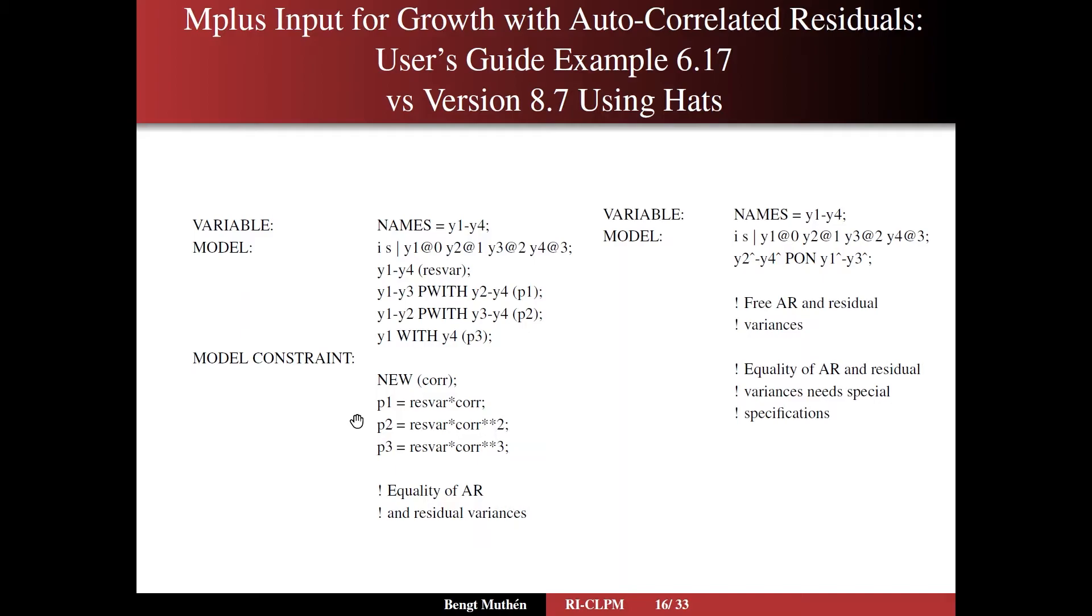And then you have to add a model constraint. This is again in old Mplus, so to speak, where you introduce the three parameters here as functions of only two parameters, residual variance, which is this equal residual variance, and correlation to power 1, 2, and 3. So this model specifies equality of autoregressions.